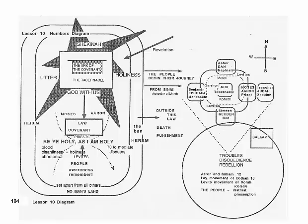This is the configuration, then, of how the tribes will set out when the Shekinah over the tabernacle moves and they are to follow. This will be the order of journey.